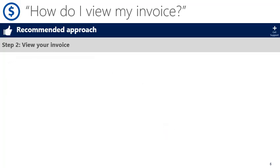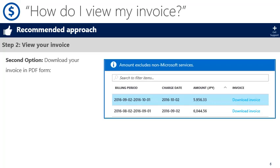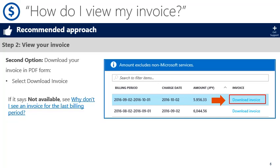The second way to view your invoice is by downloading a PDF. To do this you'll follow the process in step one to get to the invoices blade. Then you'll select download invoice next to the monthly bill you're interested in. If the portal says not available next to your invoice, you'll want to download our Microsoft doc on download Azure usage.